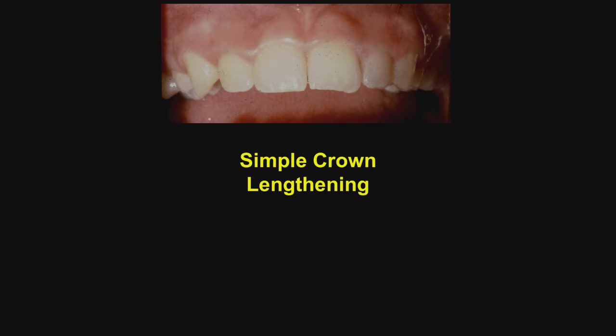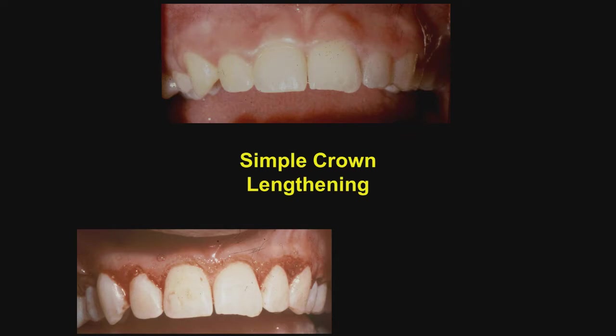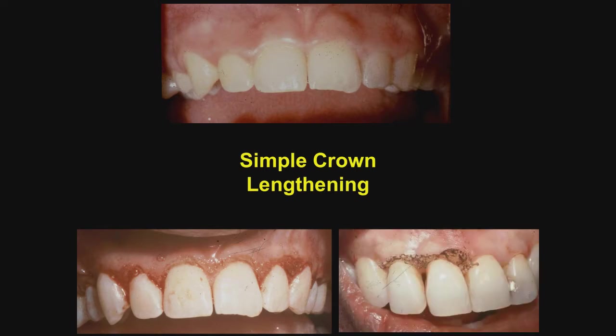Let's talk about doing simple crown lengthening, where we are not going to go apical to the clinical attachment. So we go in there, and on the left you can see where the radiosurgery has been used, and here is a slide we showed you earlier with a char layer created by the soft tissue laser. Note that there is a minimal amount of bleeding, and using the 90% cutting mode and 10% coagulation, we can create a laser-like wound.